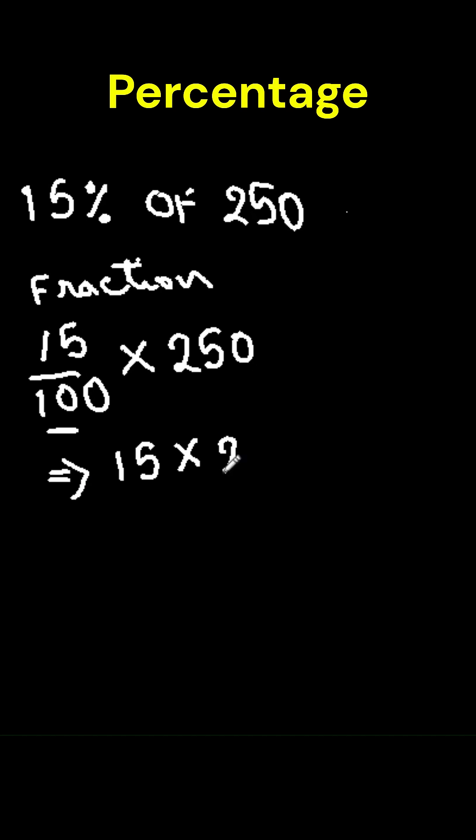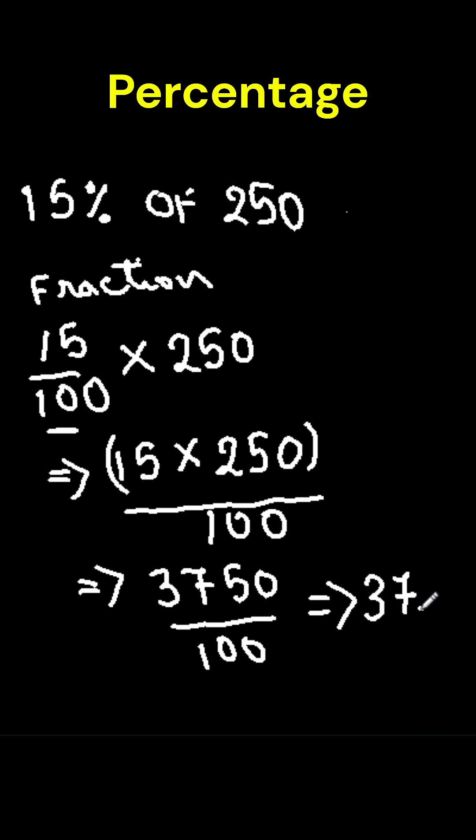That's 15 times 250 which equals 3750 divided by 100. Simplify that and you get 37.5. So, 15% of 250 is 37.5. Quick and done.